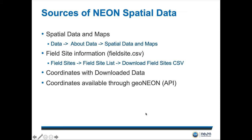We have several sources of NEON spatial data, including our spatial data in maps and our field site information. You will download coordinates with data as you get it either from our data portal or through our API. And if you want higher precision UTM easting and northing coordinates, those are available through our geoneon package. There's a good tutorial on how to use that if you search geoneon on our website.